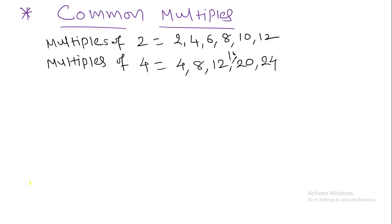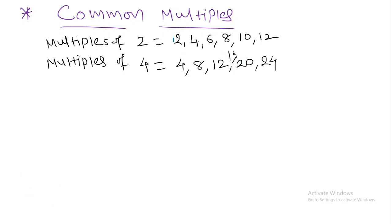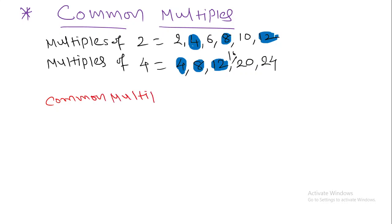Look here — how many numbers are common between these two tables? Four is common in both. Eight is common here and also in the other table. Twelve is common too. So three numbers are common here. The common multiples are: four, eight, and twelve. In this way you have to find out the common multiples.